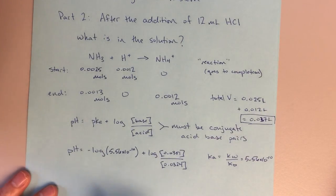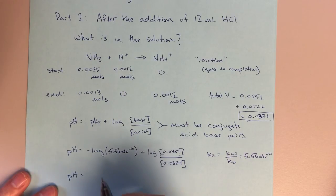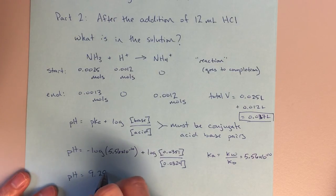So that's how I'm getting these values here. So at this point, I can just basically plug this in and solve for my pH. And that equals 9.29.